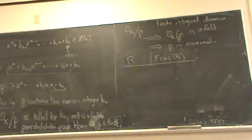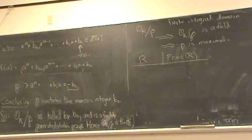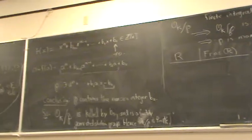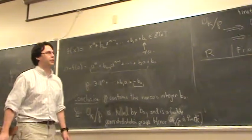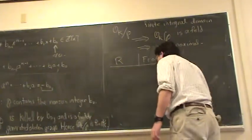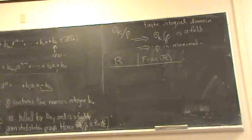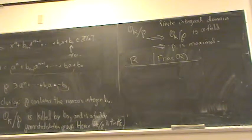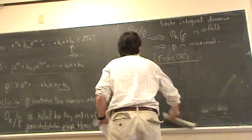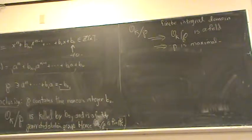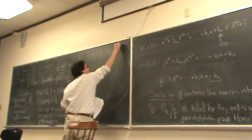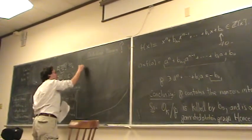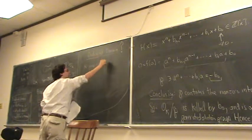So we've now proved the proposition that O_K is a Dedekind domain. There are actually a lot of Dedekind domains out there — O_K is one of them. Let me write down various examples of rings and you can try to guess whether or not they're Dedekind domains. One example of a Dedekind domain is the ring of integers of a number field. What about z ⊕ z — is that a Dedekind domain? No, because it's not even an integral domain.